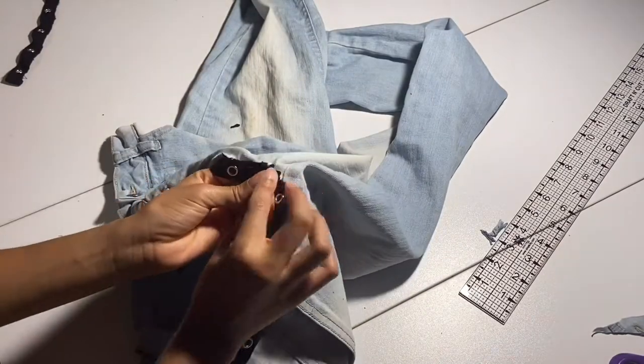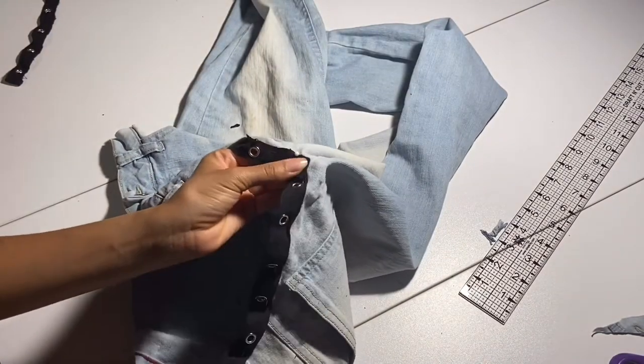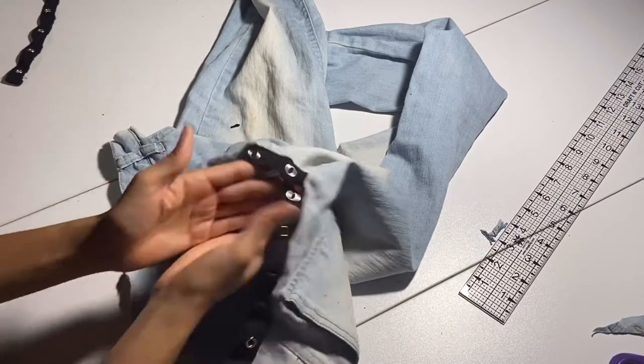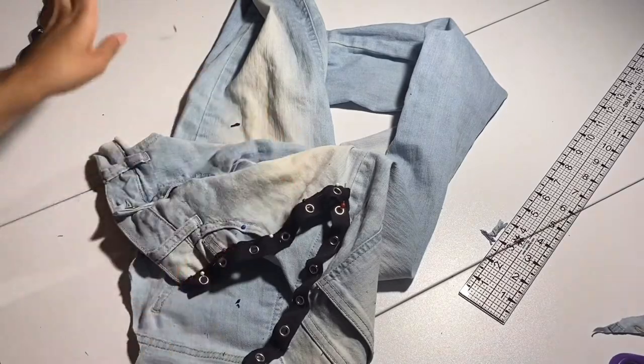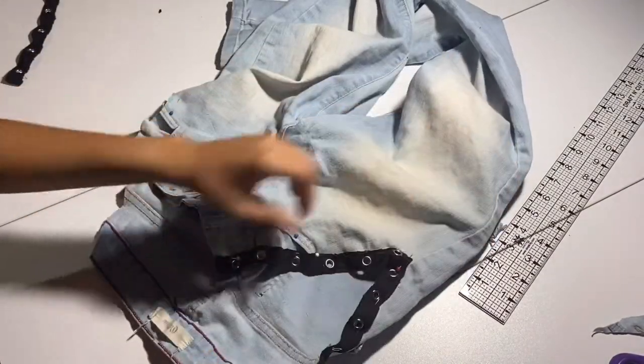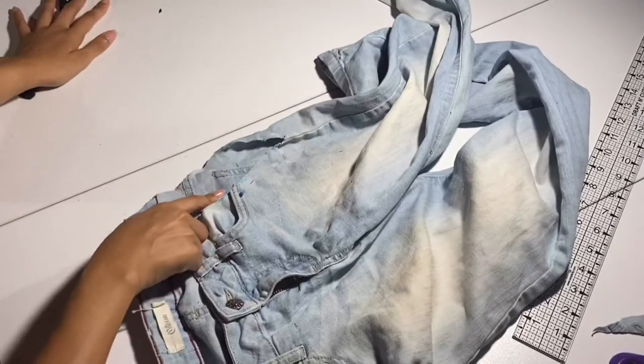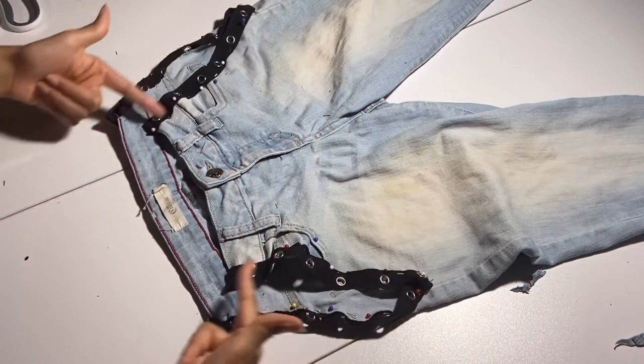So now that we have that one, fold the end of the top part down, whichever end has more, and cut off all the excess. And that's the first one, so all we have to do is the second one. And now just go sew that down.